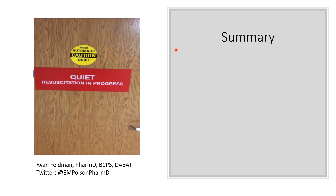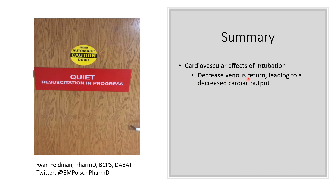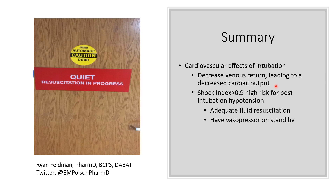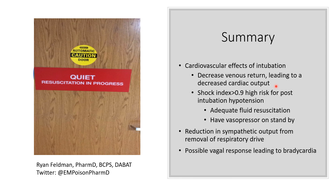In summary, the cardiovascular effects of intubation lead to a decrease in venous return, which leads to a decrease in cardiac output and can cause hypotension. Patients with a shock index — heart rate divided by systolic blood pressure — greater than 0.9 are high risk and should receive adequate pre-intubation fluid resuscitation with a vasopressor on standby. Other mechanisms include reduction in sympathetic output and possible bradycardia from vagal stimulation. If you have any questions, leave a comment below or reach out on Twitter at EMPoisonPharmD.